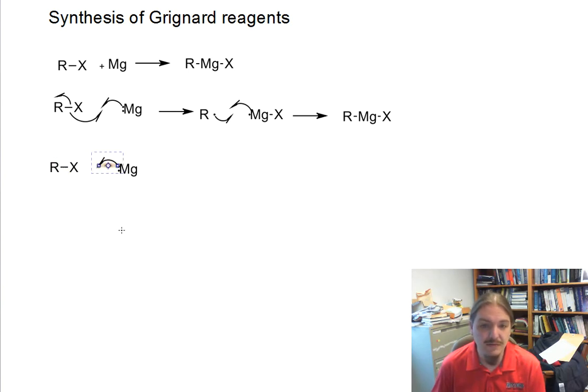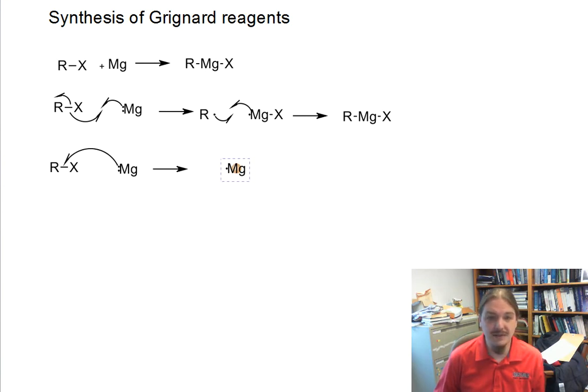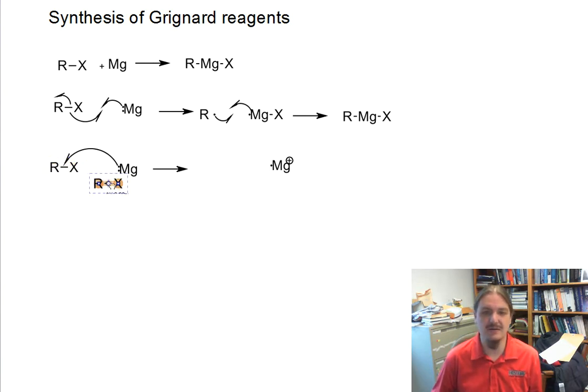Instead of that first electron donation from magnesium being used to abstract the halogen, it donates one of its electrons into the carbon-halogen bond without breaking it. This generates magnesium with one electron as a cation, and now we have this radical anion on the carbon-halogen bond. The extra electron is just in the bond, sort of in maybe the anti-bonding orbital.